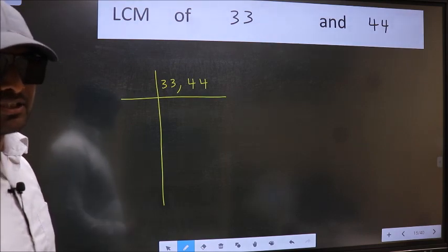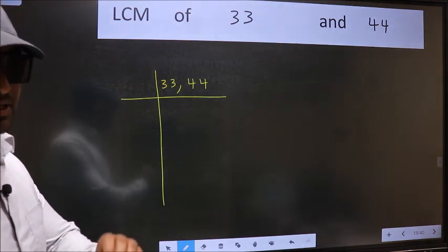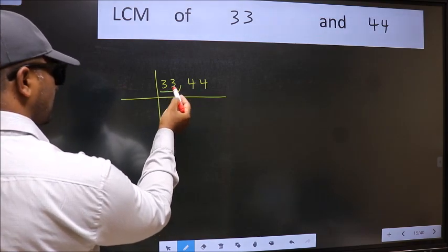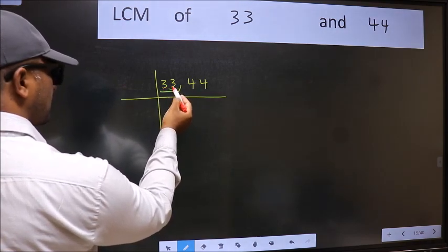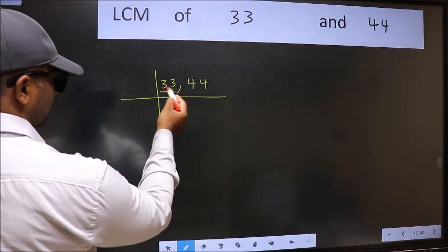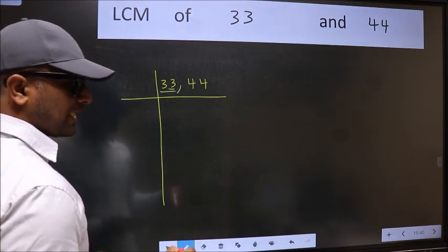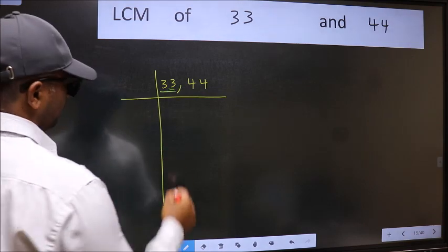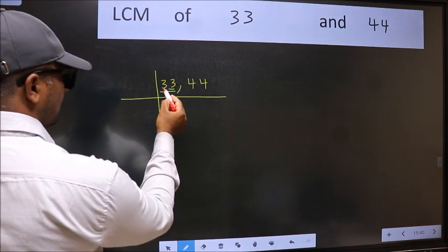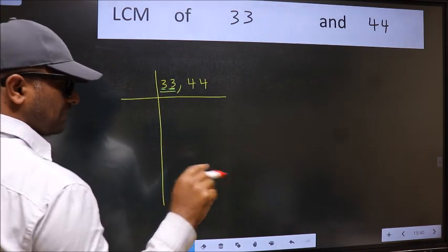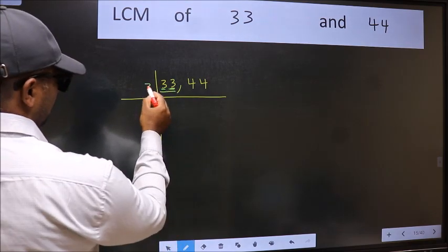Now you should focus on the first number which is 33 here. In this number, last digit 3, not even. So this number is not divisible by 2. Next prime number 3. You observe this number, each digit is 3. So this number is divisible by 3. So take 3.